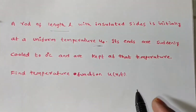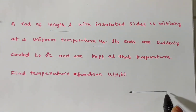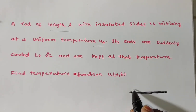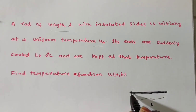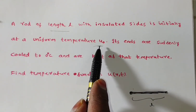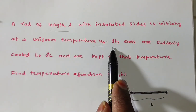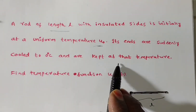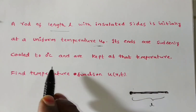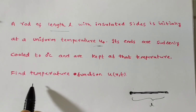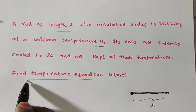The rod has length L. Its ends are suddenly cooled to 0 degrees centigrade and are kept at that temperature — 0 degrees centigrade only. We need to find the temperature function U(X, T). The problem clearly belongs to the heat equation.